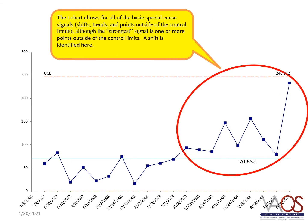Similar to the G-chart, the T-chart allows for all of the basic special cause signals used in standard SPC analyses, including shifts, trends, and points outside of the control limits. Although in the case of the T-chart, the strongest signal is one or more points outside of the control limits. A shift is identified here indicating an increase in the amount of time between events.